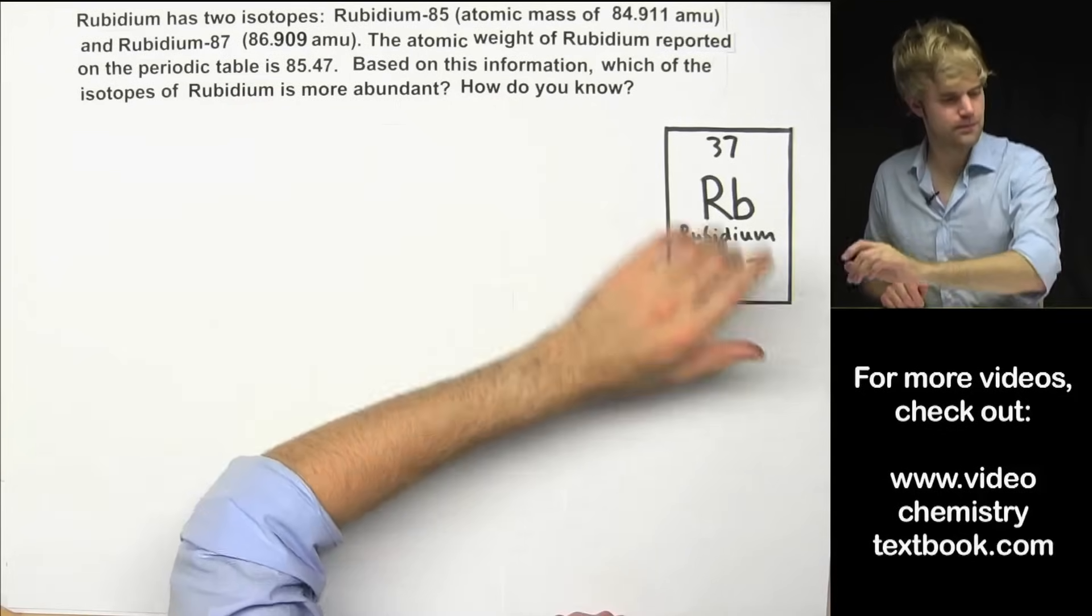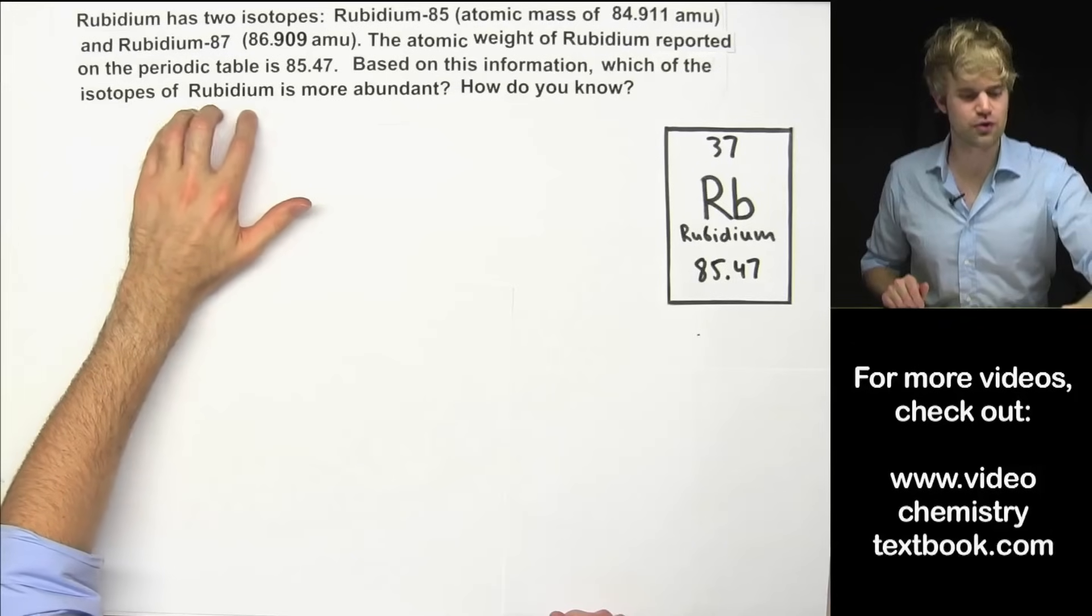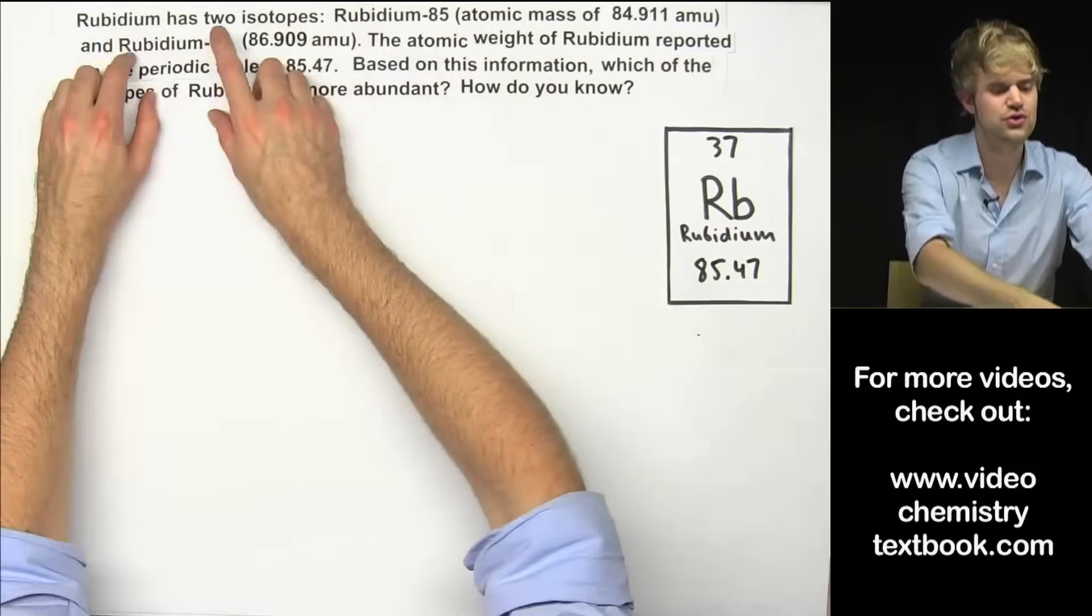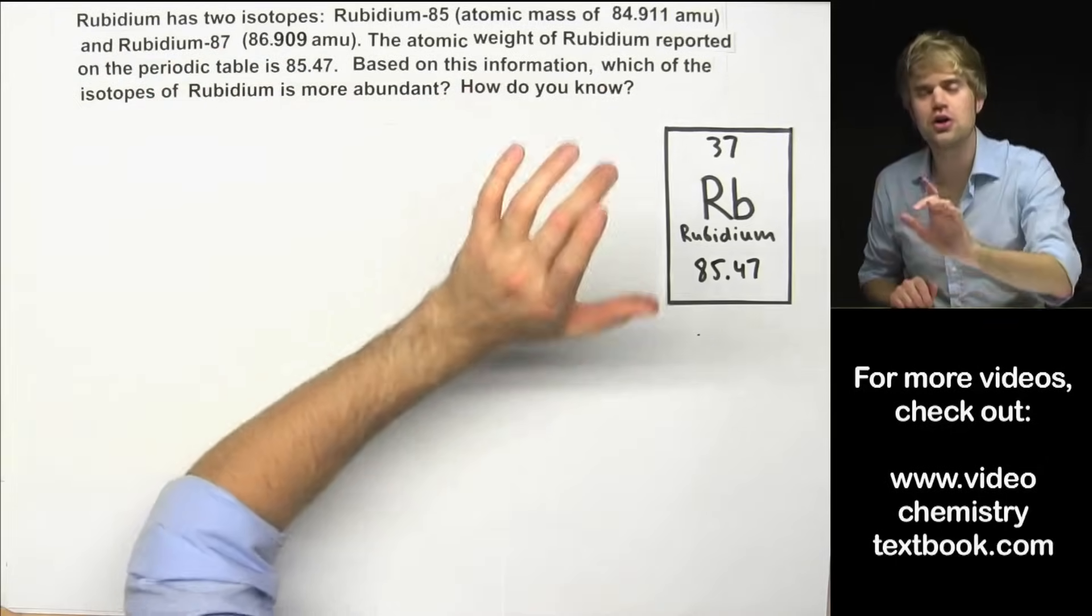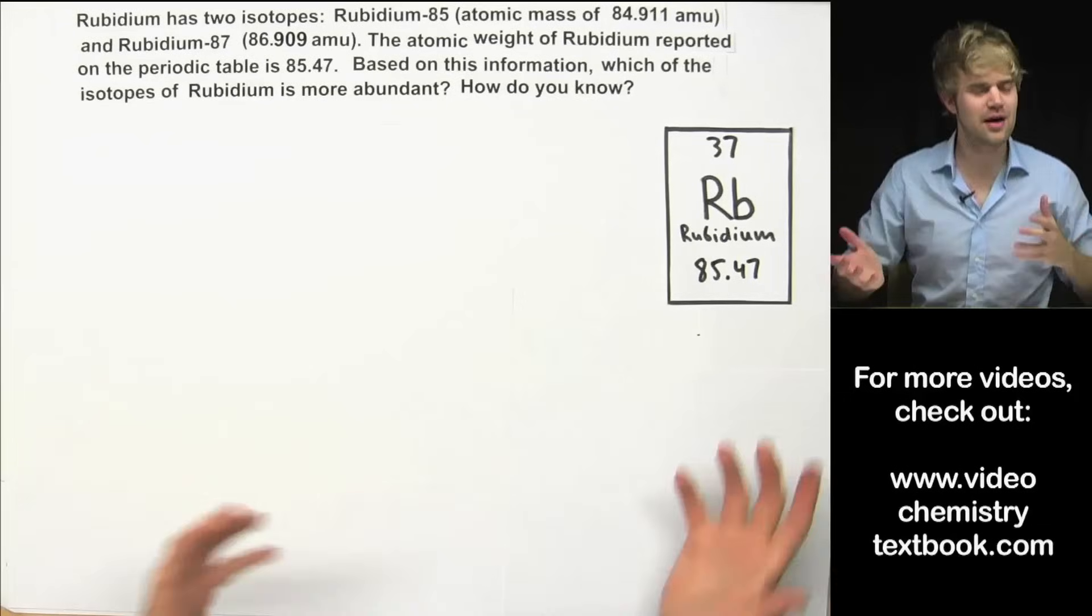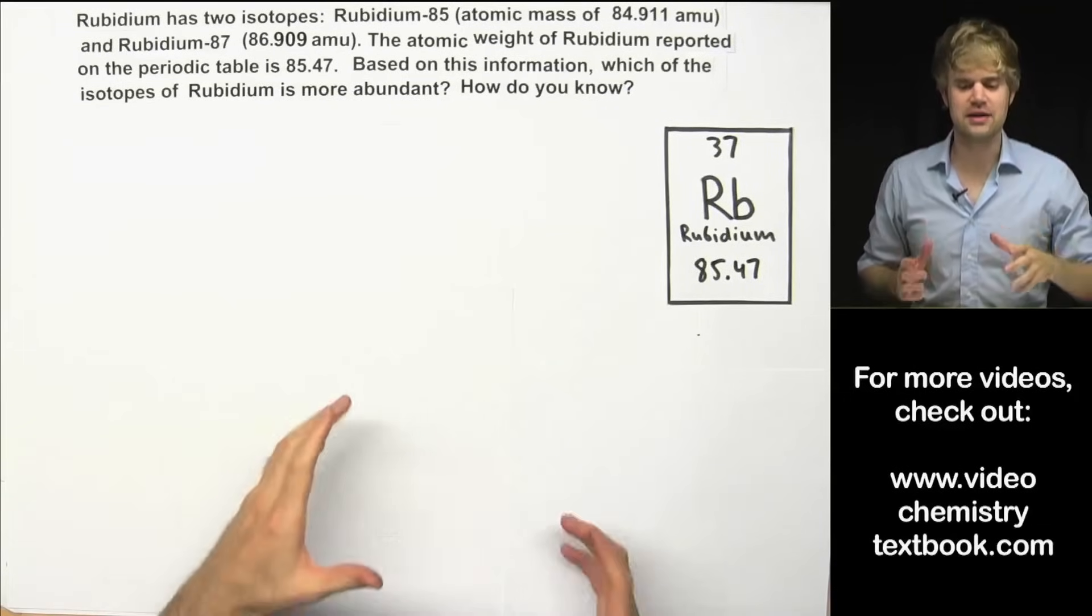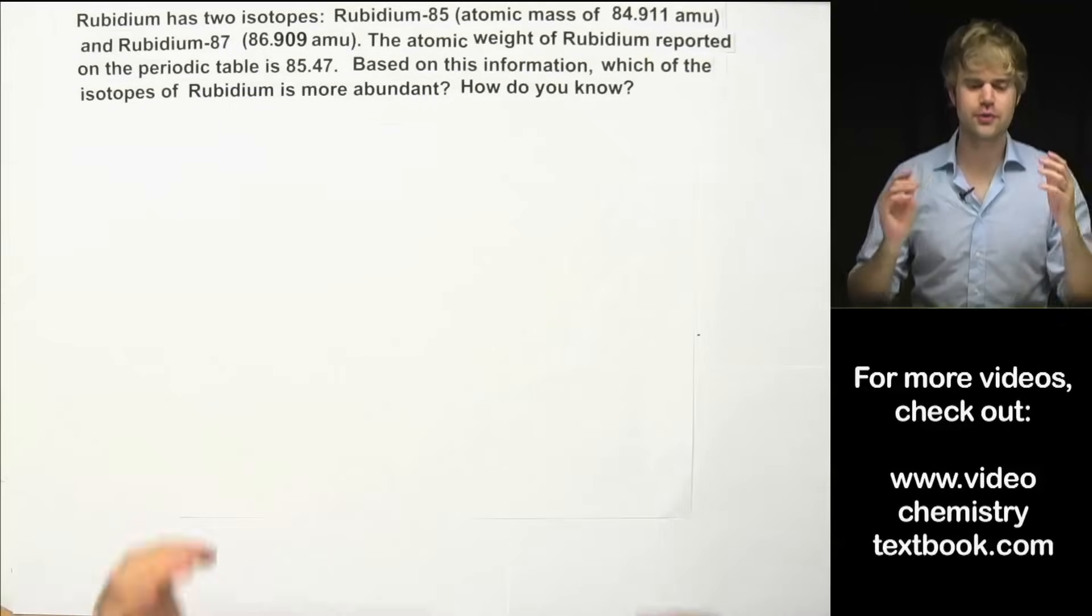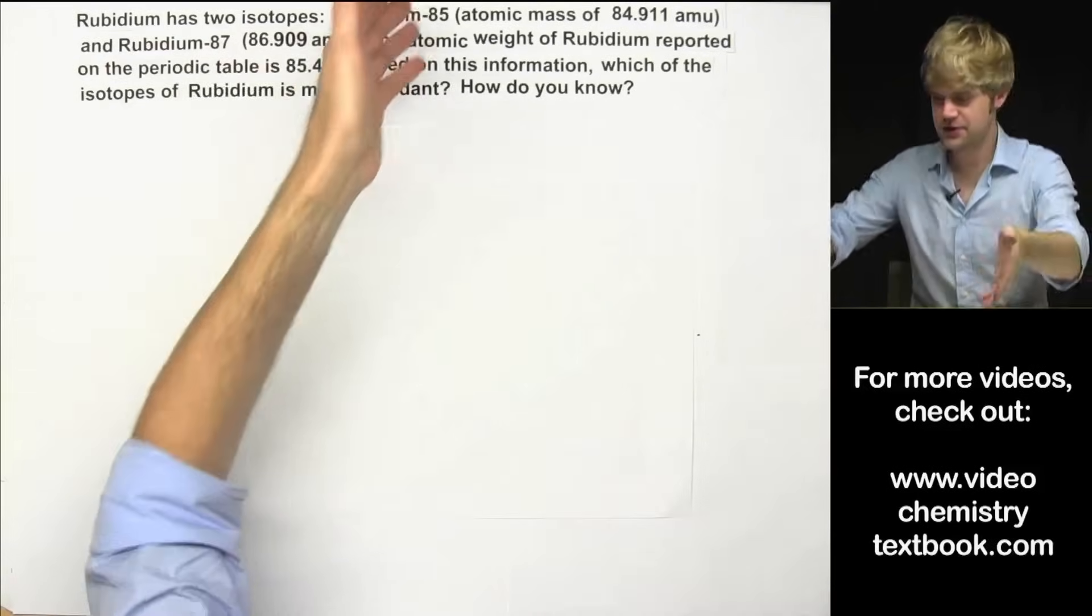Based on this information which of the isotopes of rubidium is more abundant? And we're talking about is it rubidium-85 or is it rubidium-87 and how do you know which one is more abundant? This is a thought question where you don't really have to do any calculation and it revolves around the idea of relative atomic mass, atomic weight. So now how does this relate to these two isotopes?